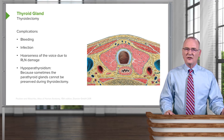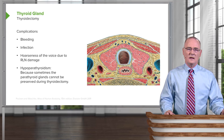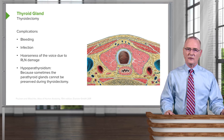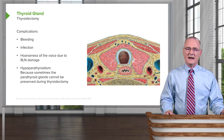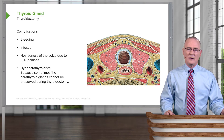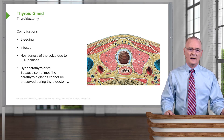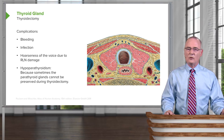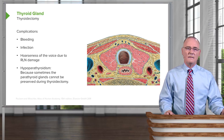Another complication to highlight is hypoparathyroidism. This occurs when the parathyroid glands cannot be adequately identified before removal of the thyroid, resulting in the parathyroids also being removed. As a result, insufficient functional parathyroid tissue remains to carry out parathyroid function.